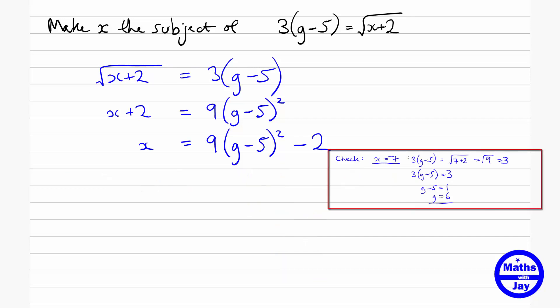So we're going to take our answer and substitute in the value g is 6. So x is going to be 9 multiplied by 6 minus 5 squared, subtract 2. So that's 9 multiplied by 1 squared, subtract 2. So that's 9 minus 2, which is 7. In other words, it looks as if we've got the right answer.